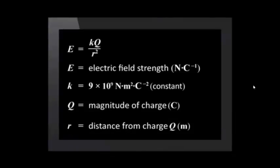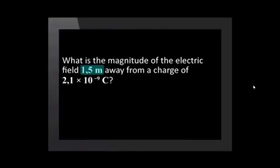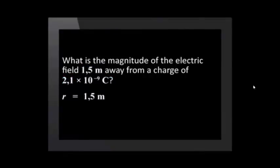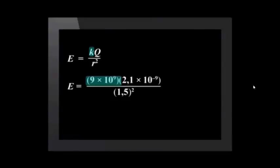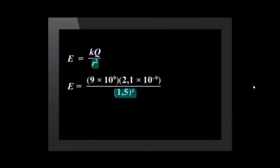What is the magnitude of the electric field 1.5 meters away from a charge of 2.1 times 10 to the minus 9 coulombs? Let us start by making a list of known values. R is 1.5 meters. Q is 2.1 times 10 to the minus 9 coulombs. Substitute these values into the equation and solve for E. E equals K Q over R squared. K is the constant 9 times 10 to the 9, Q is 2.1 times 10 to the minus 9, and R is 1.5. This gives us an answer of 8.40 newtons per coulomb. This is a positive charge, so the direction of the electric field will be outwards.